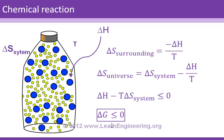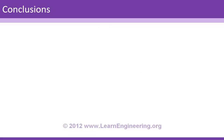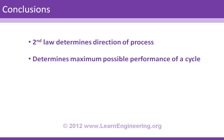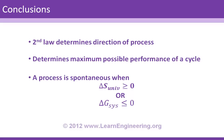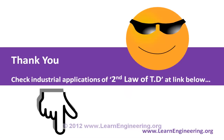In conclusion, the second law of thermodynamics determines the direction of a process and the maximum possible performance of a cycle. A process is spontaneous when the entropy change of the universe is greater than zero, which is equivalent to the Gibbs free energy change of the system being less than zero. Thank you for watching. Have a nice day.